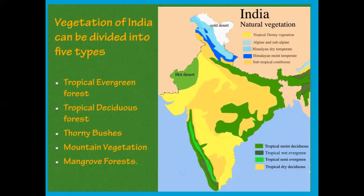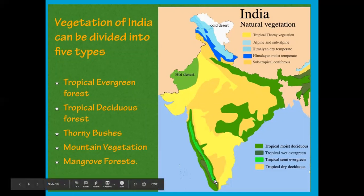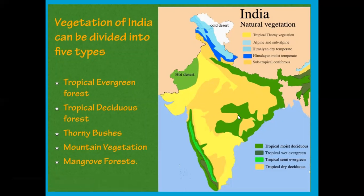Looking at this map of India, it shows evergreen and deciduous forests and other natural vegetation of India. The colors indicate evergreen forests in the northeastern states and the Western Ghats, while deciduous forests are found in Bihar, Odisha, Madhya Pradesh, and a few areas of the Himalayas.